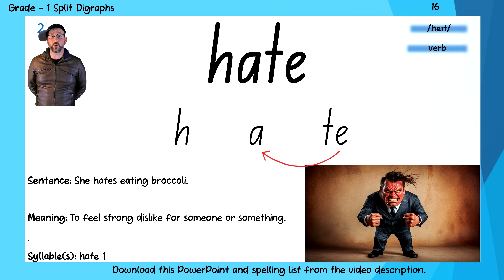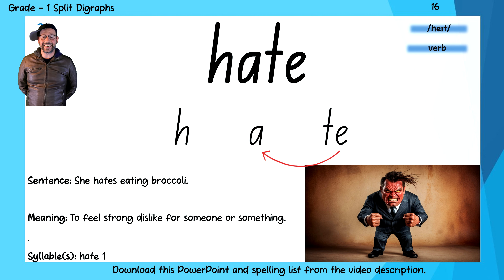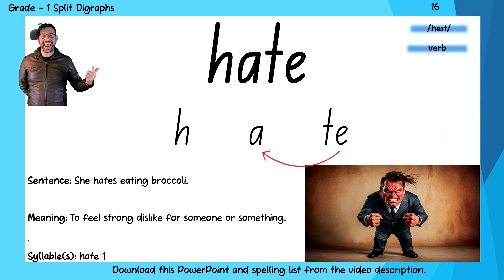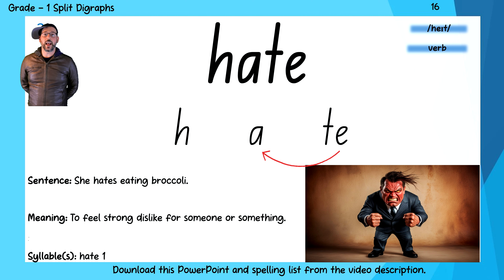Next word on our list is the word hate. I hate eating broccoli. Hate. And the sounds of hate are H, A, T — hate. And hopefully you can see how the silent E at the end of the word changed the sound of the vowel.